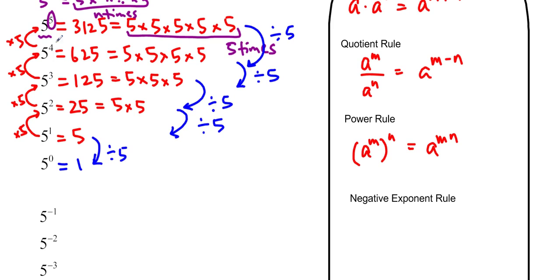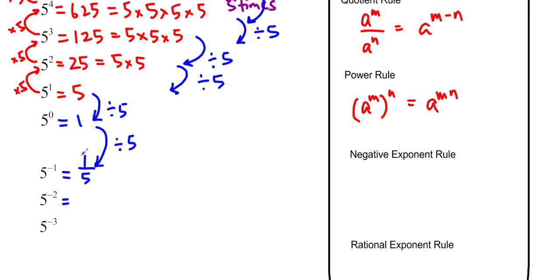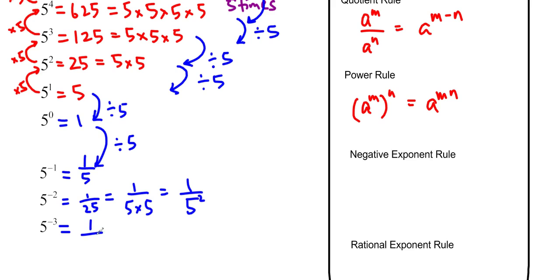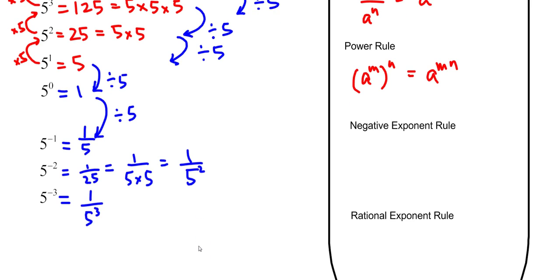As we continue downwards — 5, 4, 3, 2, 1, 0 — the next one must be negative 1. We construct it the same way: go from 1 down to 5 to the negative 1 by dividing by 5, giving us 1 over 5. For 5 to the negative 2, divide by 5 again: 1 over 5 divided by 5 is 1 over 25, which is 1 over 5 squared. So 5 to the negative 3 is 1 over 5 to the 3. The negative exponent rule is: a to the negative n equals 1 over a to the n.